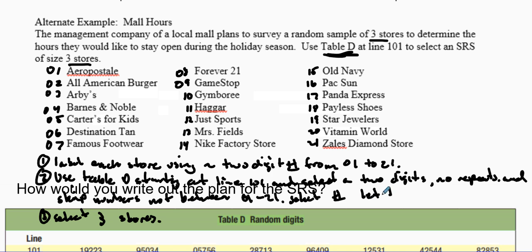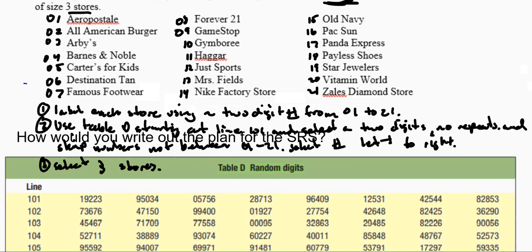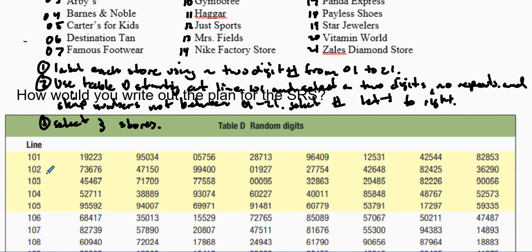I'm going to show you how this works. Here is this two-digit table. We're going to start at line 101, and we're going to start selecting two-digit numbers. We have 19. Is 19 between 01 and 21? It is, so that is our first store. Then we go over to 22. Twenty-two is not in there, so we cross it out. We're going to skip numbers not between 01 and 21. Next one we have is 39. Thirty-nine is not between those, we skip that one.